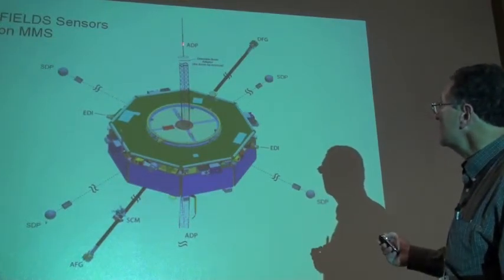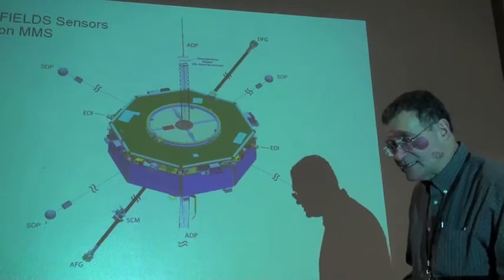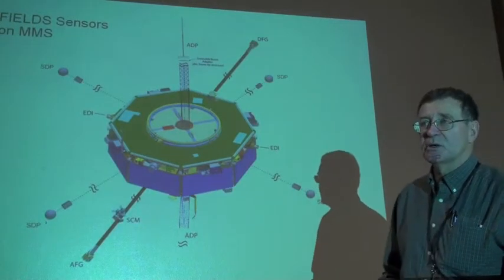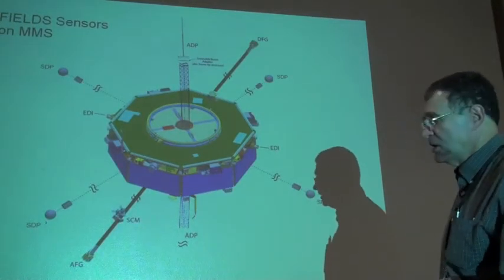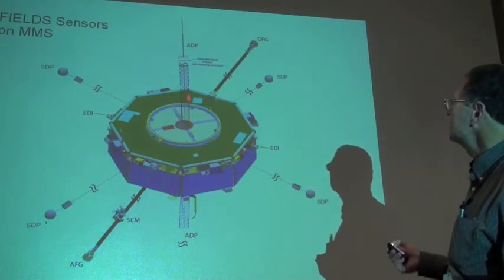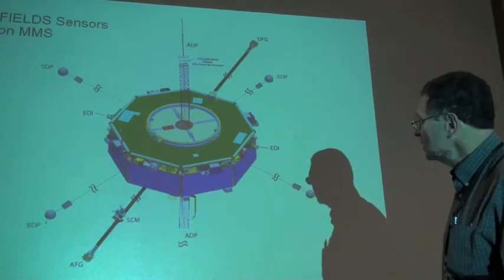To accomplish this, we also need a measurement along the axis of the spacecraft. This is a real challenge because we can remove offsets from the probes that are in the spin plane because they're spinning, but it's far more difficult with the one along the axis.